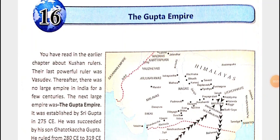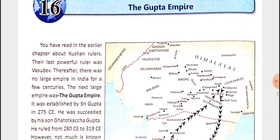Good morning students, welcome to your social science class. Today we will read the 16th chapter of history, class 6th: the Gupta Empire. In this chapter we will read about the whole Gupta Empire, their main kings, their achievements, their administrative, social, economic, and political conditions. Let's start.